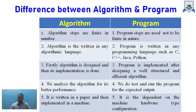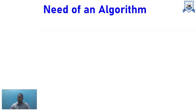An algorithm is written on paper or in any text editor such as Notepad or MS Word, and then implemented on a machine. First we write the algorithm with finite, unambiguous steps, then implement it on a computer. A program, however, is dependent on the hardware type, configuration, and the operating system for which it is written.